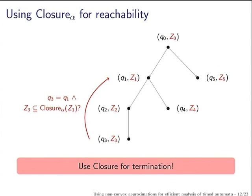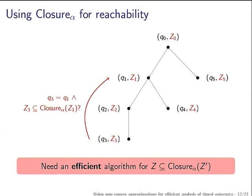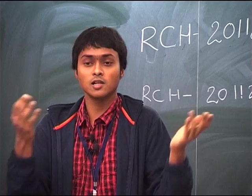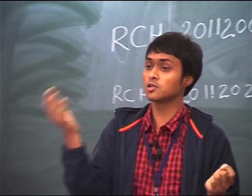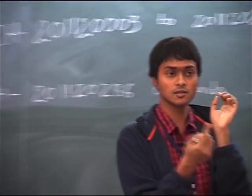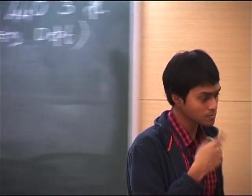If a zone is included in the closure of another, it means every region that intersects this zone intersects the other zone too — so you are not gaining anything more by exploring it. This calls for a very efficient algorithm for checking inclusion of a zone with respect to the closure of another zone. Each time you come up with a new zone you have to check inclusion with respect to closure, so you want it to be at least as efficient as normal inclusion.